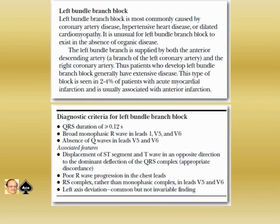This type of block is seen in 2 to 4 percent of patients with acute myocardial infarction and is usually associated with anterior infarction. Diagnostic criteria for left bundle branch block are: QRS duration equal to or more than 0.12 seconds; broad monophasic R-wave in lead I, V5, and V6; absence of Q-wave in lead V5 and V6. Associated features include displacement of ST-segment and T-wave in an opposite direction to the dominant deflection of the QRS complex — that is, appropriate discordance — then poor R-wave progression in the precordial leads, then RS complex rather than monophasic complex in lead V5 and V6, and left axis deviation, which is common but not invariable.